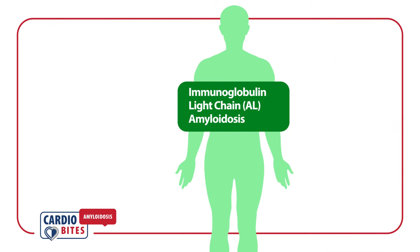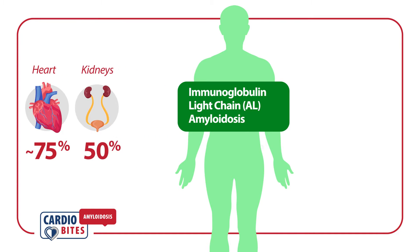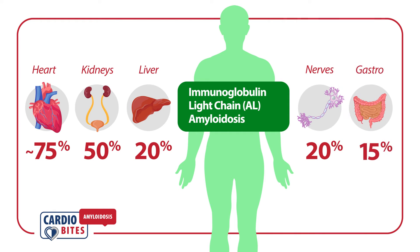In patients with immunoglobulin light chain amyloidosis, the heart is usually the most commonly affected organ, followed by the kidneys, nerves, liver, and gastrointestinal system.